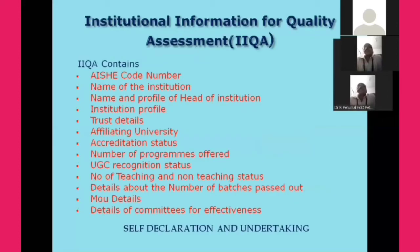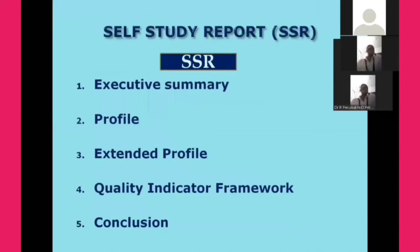The Institutional Information for Quality Assessment, IIQA, is the first document to be uploaded in the NAAC portal. It contains the AISHE code number, name of the institution, name and profile of the head of the institution, institution profile, trust details, affiliating university, accreditation status, number of programs offered, UGC recognition status, number of teaching and non-teaching staff, details about the number of batches passed out, MOU details, and details of committees for effectiveness. We must also submit a self-declaration and undertaking in a prescribed form. Once the IIQA is approved, we must prepare and submit the SSR within 45 days.